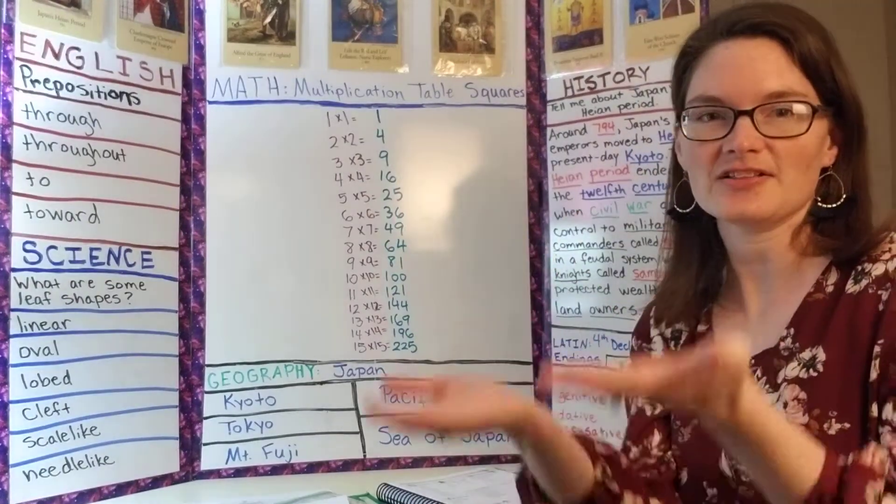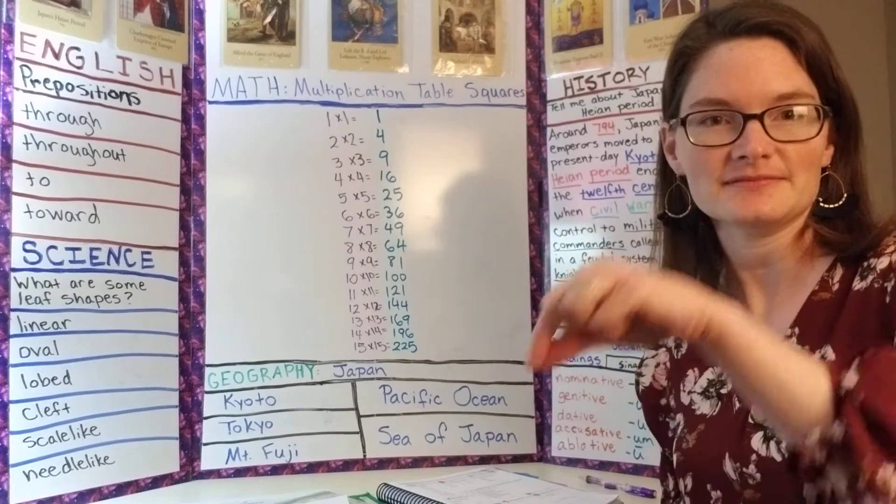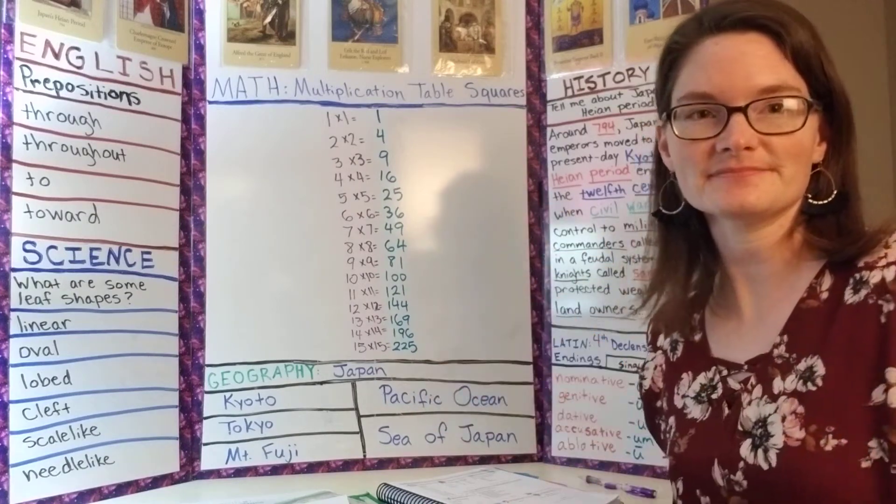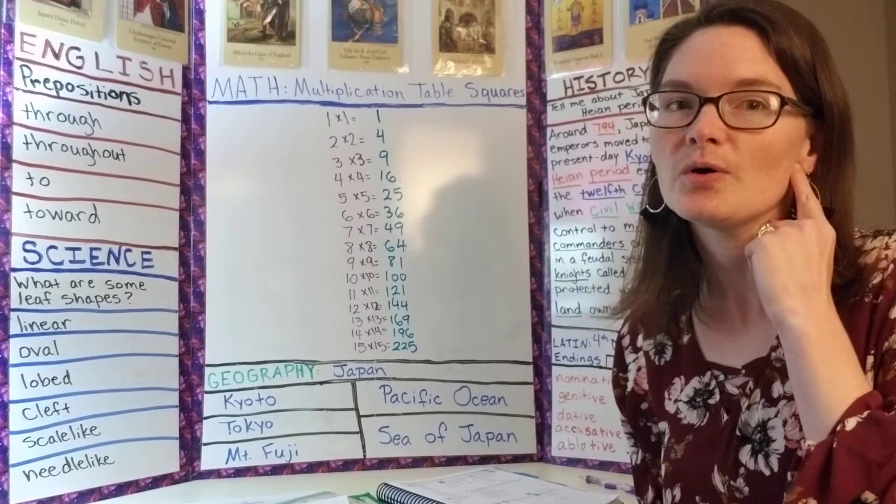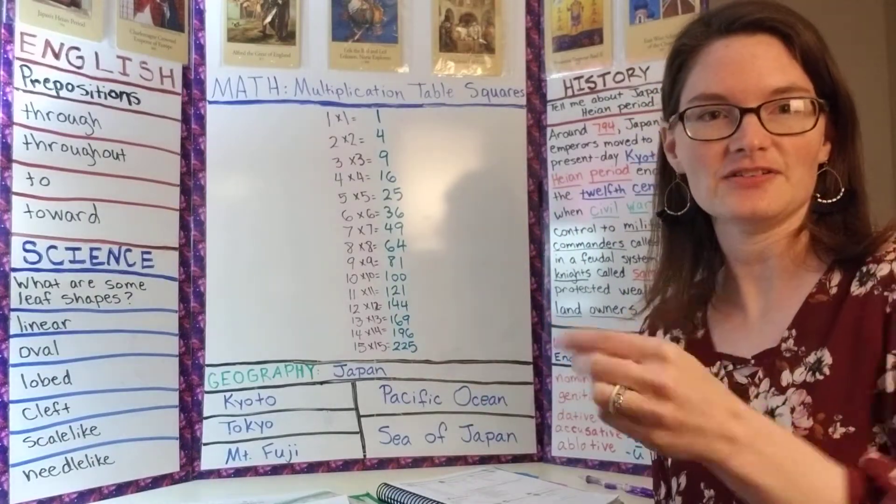Then we have scale-like, like you're weighing a scale, and needle-like, like you're sewing. So you have linear, oval, lobed, cleft, scale-like, and needle-like.